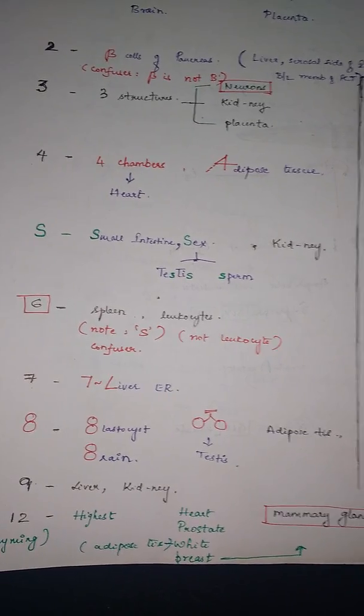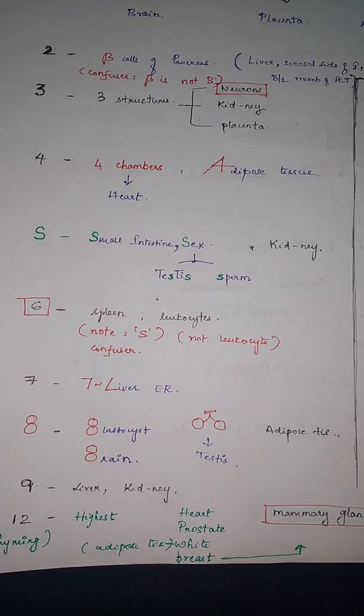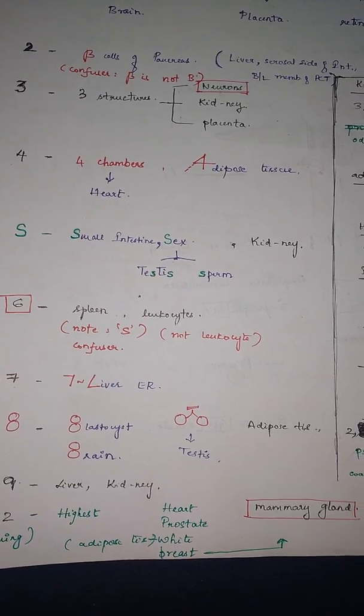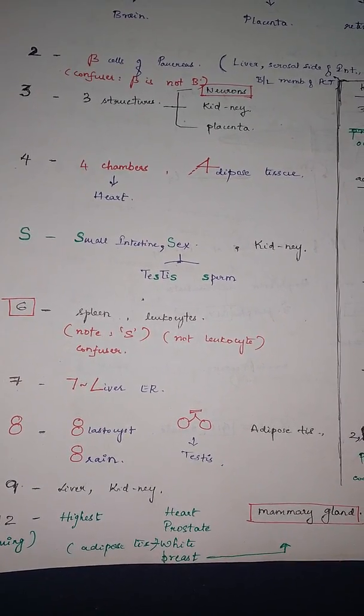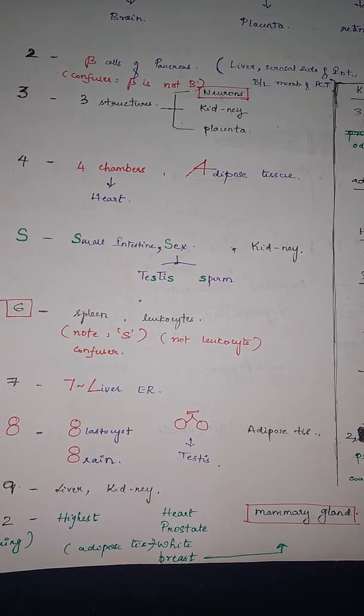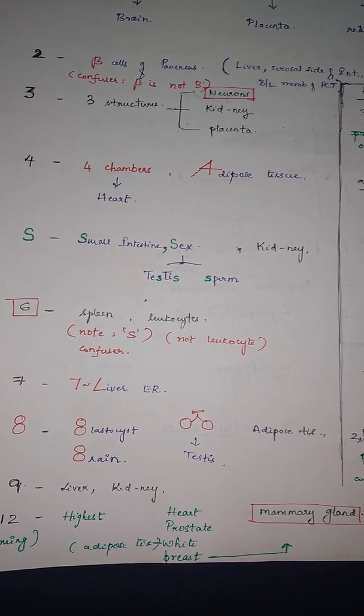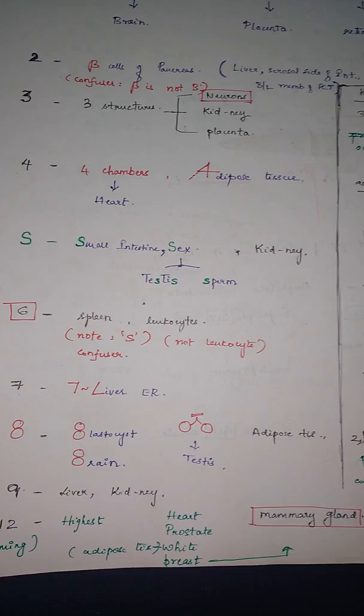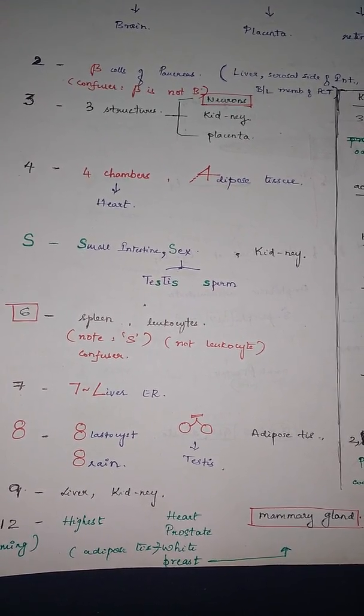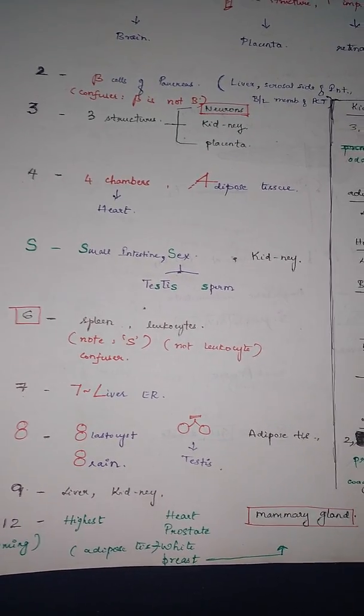Six stands for spleen. Spleen also starts with S, so it is a confuser. Six you have to remember by heart, so six is spleen and leukocytes. And seven, if you rotate it, it looks like L, so it is liver, liver endoplasmic reticulum.